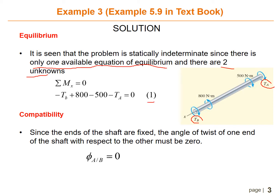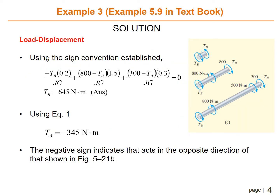For compatibility, since the ends of the shaft are fixed, the angle of twist of one end of the shaft with respect to the other must be zero. So theta A to B equals zero.